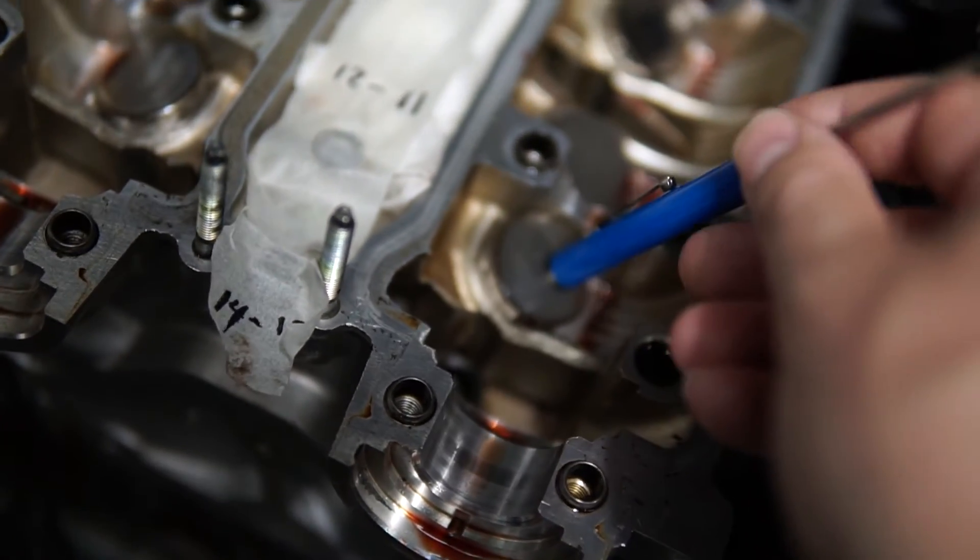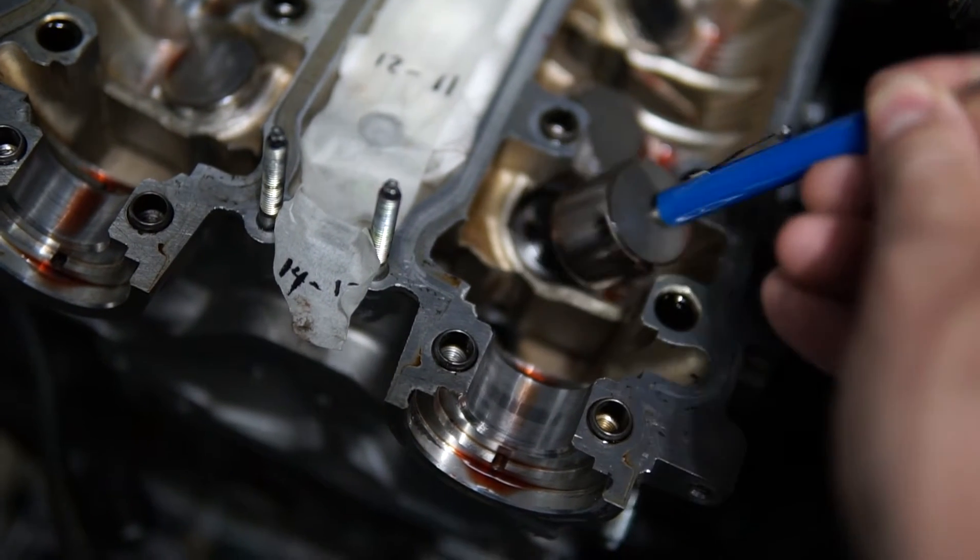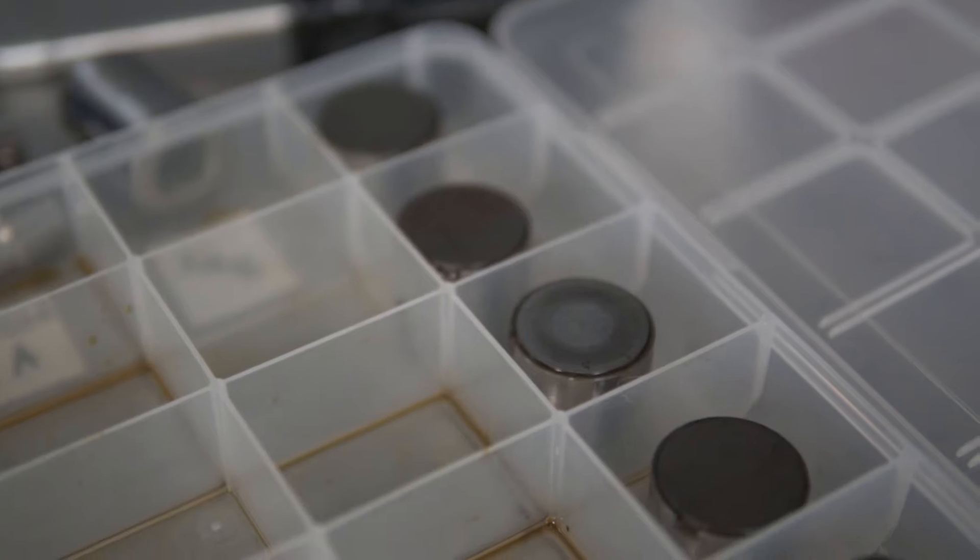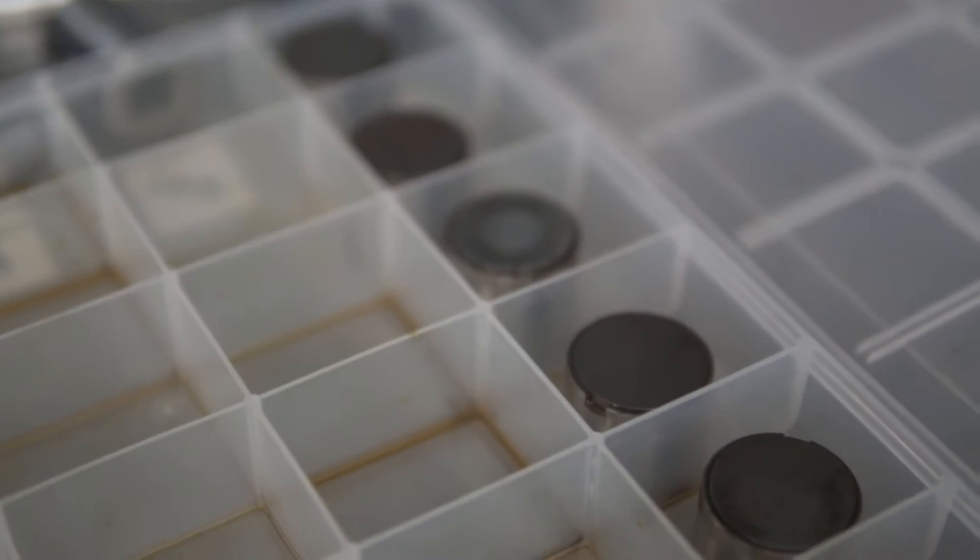Remove those valve bucket assemblies and organize them in a way so you won't lose track of which locations they are from. These plastic organizers work great for this.